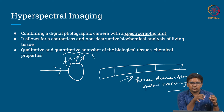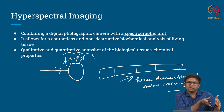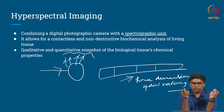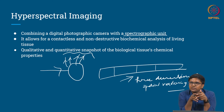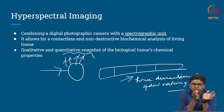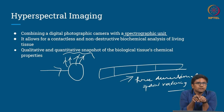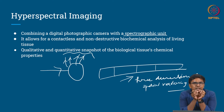This technology allows for contactless and non-destructive biochemical analysis of living tissue. Each living tissue has its own spectral properties, which are utilized here. For example, the spectral property of the liver is due to the blood flowing in it, and the spectral property of the common bile duct and gallbladder is due to the bile inside it. Each tissue in the human body has a different spectral property, and they do qualitative and quantitative snapshots of the biological tissues' chemical properties.